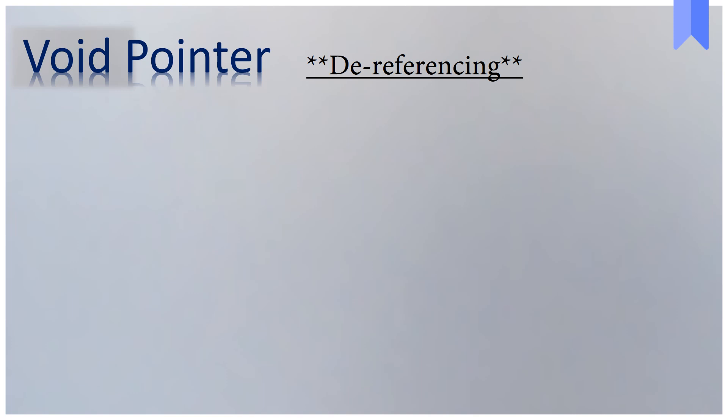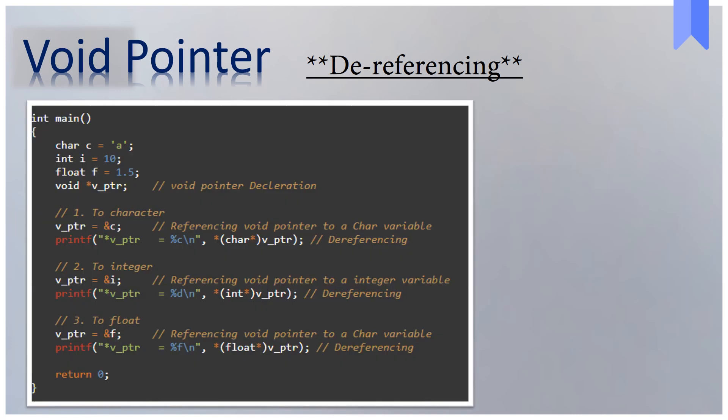A void pointer must be typecasted before dereferencing it. Let's see how to typecast a void pointer to another type. In this example, first I have referenced the void pointer to point to a character variable, and then by char star, I am typecasting the void pointer to a character pointer. The outer star is to access the value of it. Similarly, below I have referenced and dereferenced the void pointer to integer and then float variable.